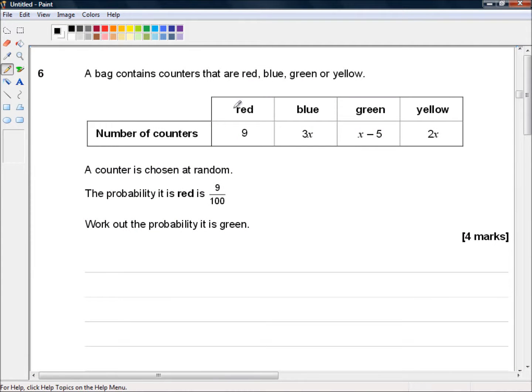Hello and welcome to question 6 of the AQA GCSE new style sample paper. This is the 8300-3H, the third paper, and it's a calculator paper.